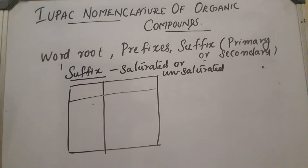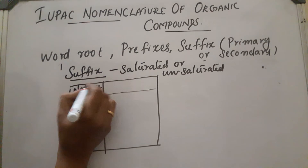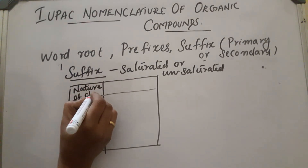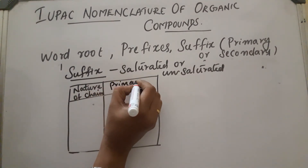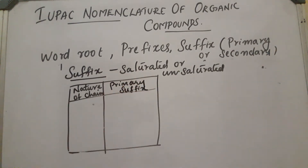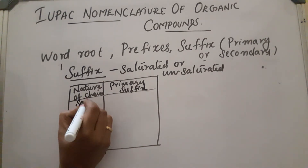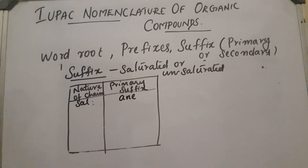Here we can write the nature of the chain — whether it is saturated or unsaturated — and we write the primary suffix accordingly. If the nature of the chain is saturated, we add 'ane' along with the word root. For example, if the word root is 'eth,' the name becomes ethane.